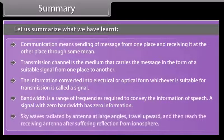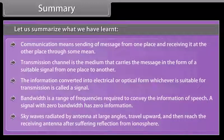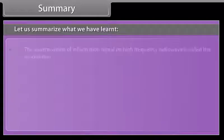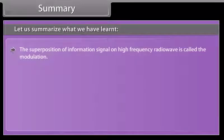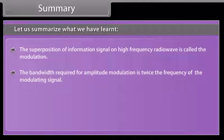Skywaves radiated by an antenna at large angles travel upward and then reach the receiving antenna after suffering reflection from the ionosphere. The superposition of an information signal on a high-frequency radio wave is called modulation. The bandwidth required for amplitude modulation is twice the frequency of the modulating signal.